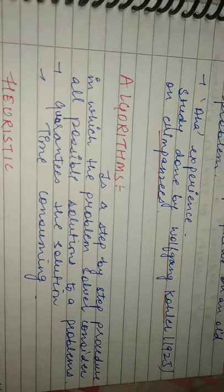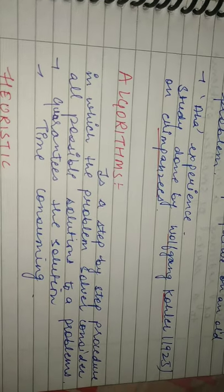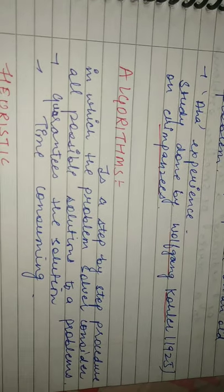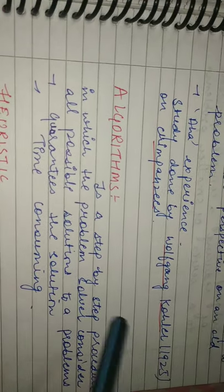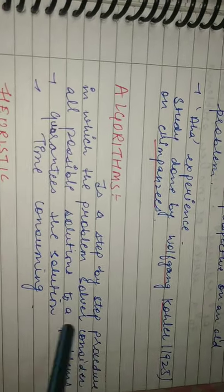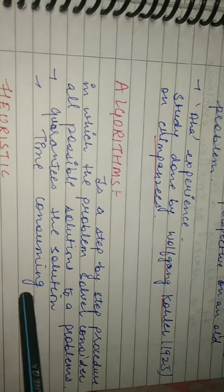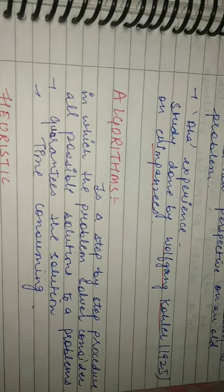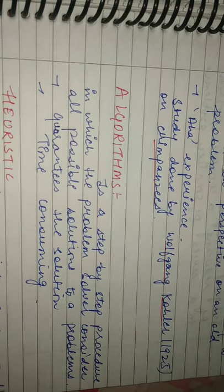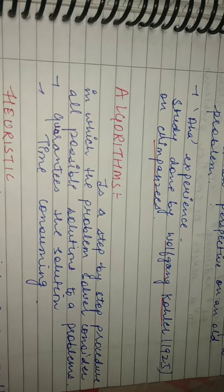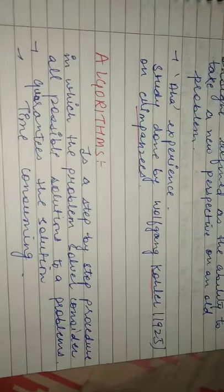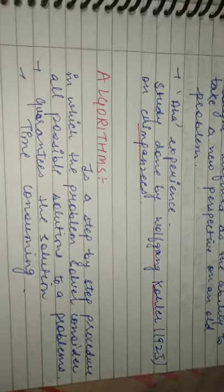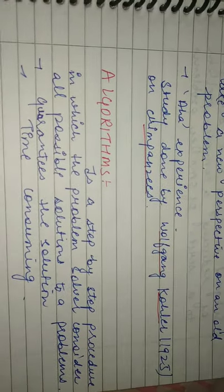Algorithm — यह step by step procedure होता है, जिसमें problem solver कोई भी problem solve करते समय सारे possible solutions का use करता है. यहाँ पर हमारा solution guaranteed होता है कि हमें solution मिलेगा, लेकिन यह time consuming होता है. Suppose एक suitcase का lock हो गया, तो हमारे पास तीन digits के option हैं 0, 0, 0 — तो जितने भी three digit combinations हैं, हम सब apply करके उस problem को solve करेंगे — यह बहुत time consuming होती है.